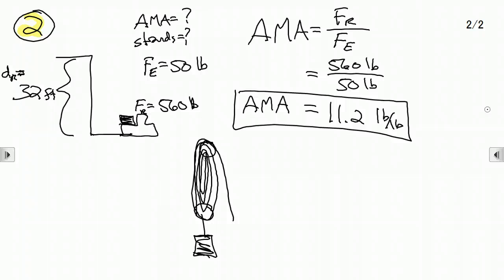So how many strands do we need? How many strands supporting that? Well, we need an actual mechanical advantage of 11.2. For a block and tackle system, the ideal mechanical advantage, you can measure the effort distance or resistance distance, but it's really just the number of supporting strands is our ideal mechanical advantage.